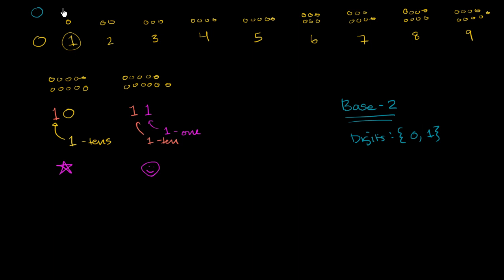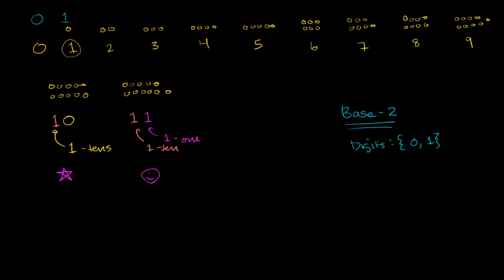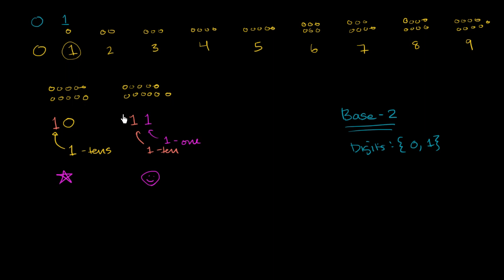If I have one thing, I can still use the number 1. But now all of a sudden I have two objects, and I'm limited to only these two digits. So how could I represent it? Instead of having a tens place, I could create a twos place. In base 10 we said we had 1 ten and 0 ones — so in base 2, why can't we say that we have 1 two and 0 ones? This right here is saying 1 two and 0 ones.